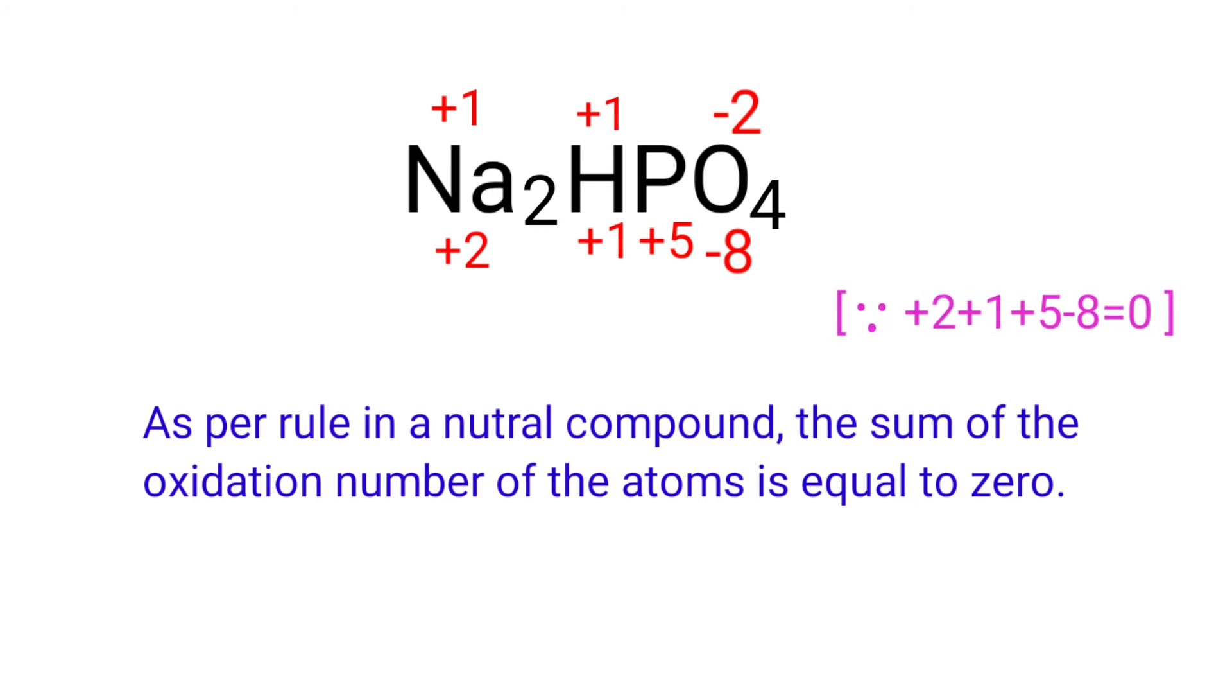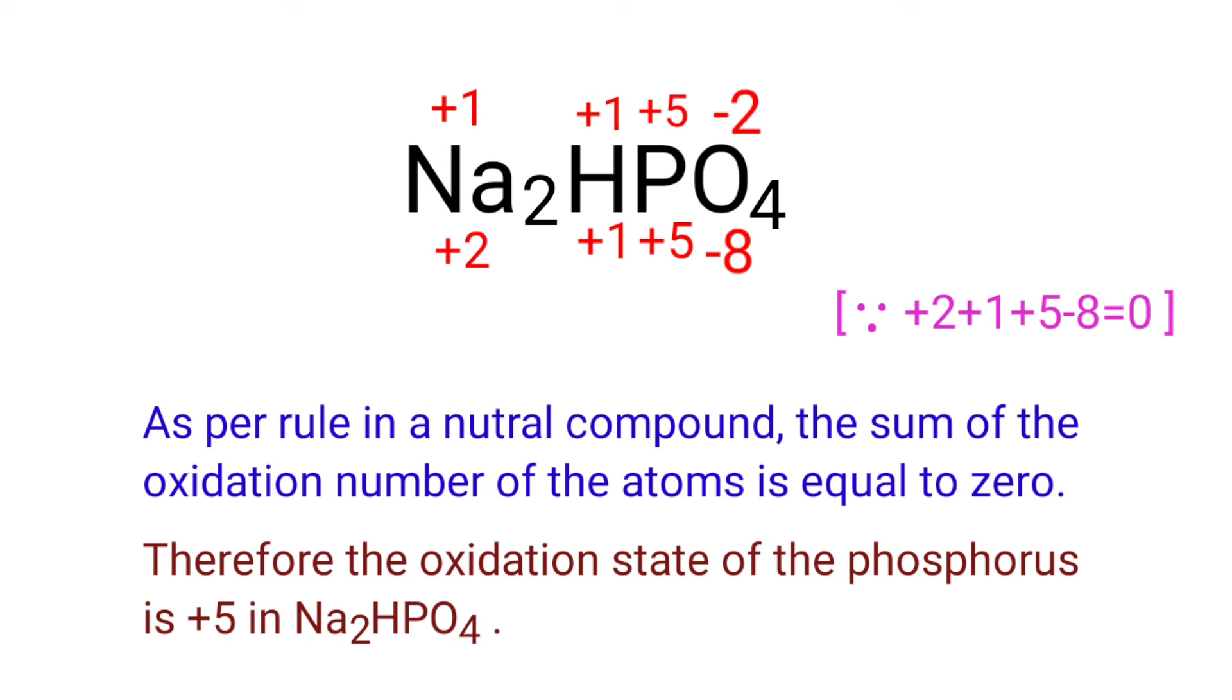So we can write the oxidation number of phosphorus is plus five. Therefore, the oxidation number of phosphorus is plus five in Na2HPO4.